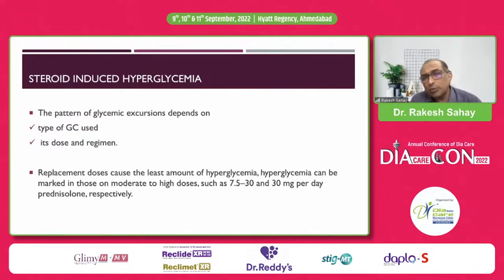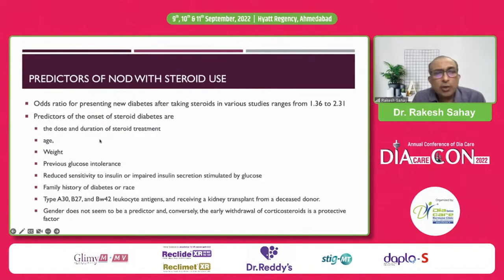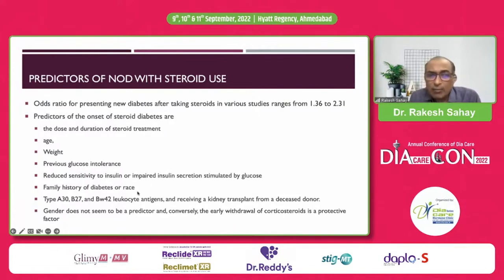The pattern of glucose excursion depends upon the type of glucocorticoid used, its dose, and regime. Replacement doses of 7.5 mg or lower may not cause much hyperglycemia; moderate doses of 7.5 to 30 mg may have a higher incidence; and those on more than 30 mg per day very often go on to develop hyperglycemia. Predictors of new-onset diabetes with steroid use include dose and duration of steroid treatment, age of the patient, and obesity.